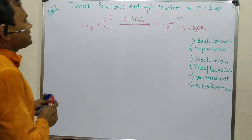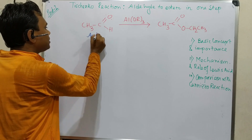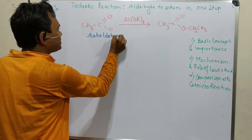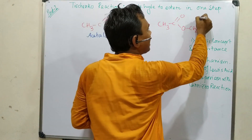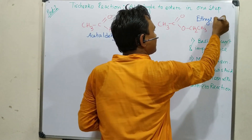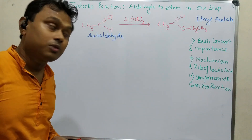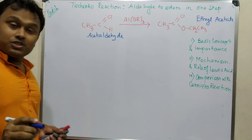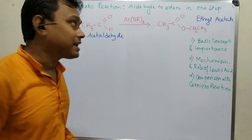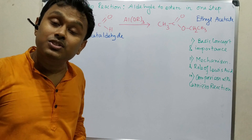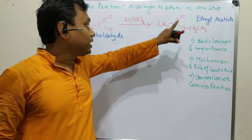First, consider acetaldehyde. In the presence of aluminum alkoxide it is converted into ethyl acetate. Ethyl acetate is a very important solvent in industrial processes, so the key importance of this reaction is its use as the industrial process for ethyl acetate preparation. Please keep this in mind.